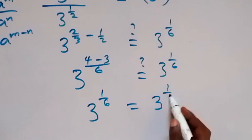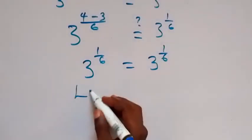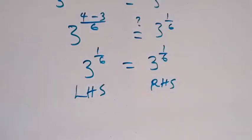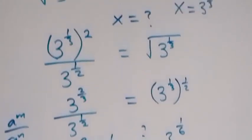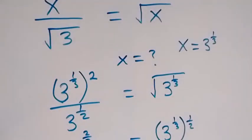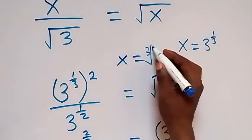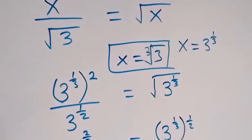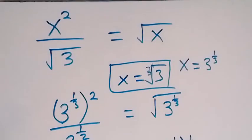The left hand side equals the right hand side, so we confirm that the value of x in this given problem is 3 raised to power 1 over 3, which we can write as the cube root of 3. Thank you for watching. Subscribe for more exciting videos, turn on the notification bell, share this video, give it a thumbs up, and put your comment in the comment section. See you next class, bye for now.